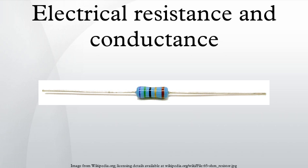Why is there such a difference? Loosely speaking, a metal has large numbers of delocalized electrons that are not stuck in any one place, but free to move across large distances, whereas in an insulator, each electron is tightly bound to a single molecule, and a great force is required to pull it away. Semiconductors lie between these two extremes. More details can be found in the article on Electrical Resistivity and Conductivity. Resistivity varies with temperature. In semiconductors, resistivity also changes when light is shining on it.